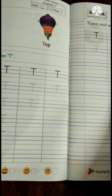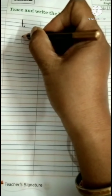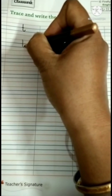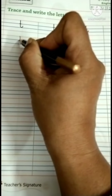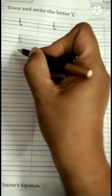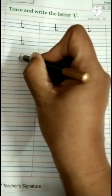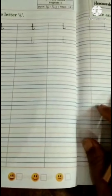Now, please turn your page. See on page number 121 — small letter T. How to trace? Again, we will draw one standing line and we will end with a little bit of curve, and then we will draw one slipping line this way. It is small letter T. Please complete these two pages too.